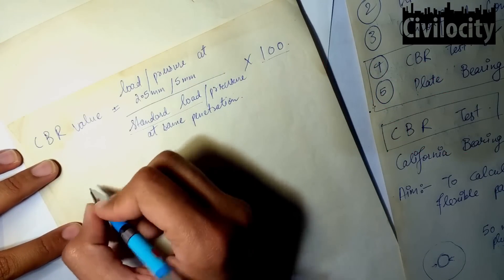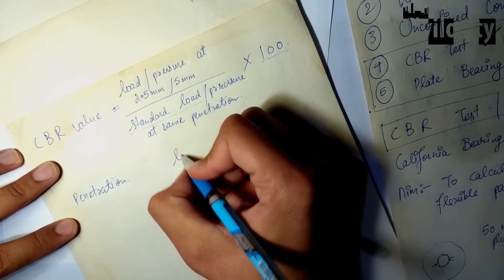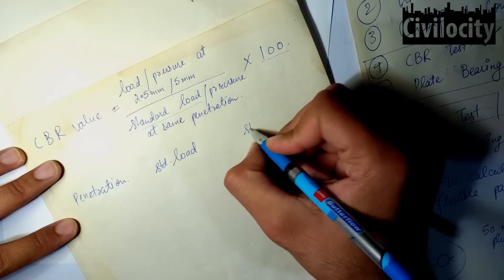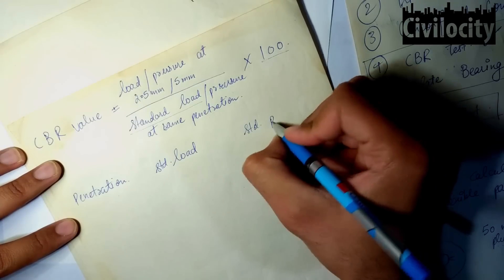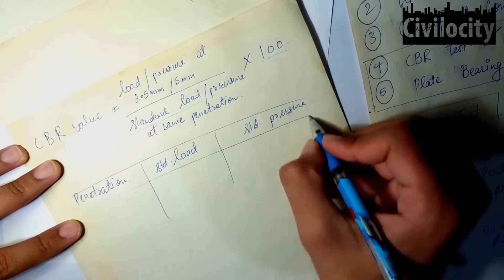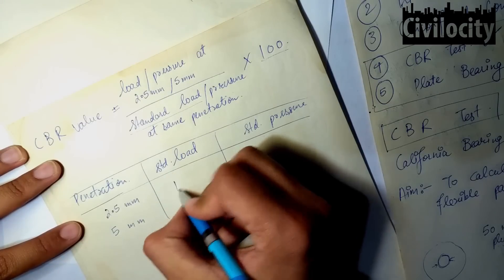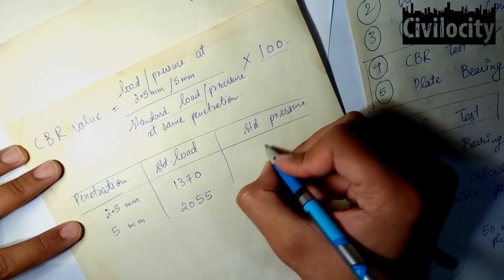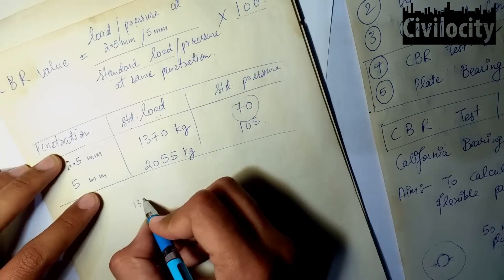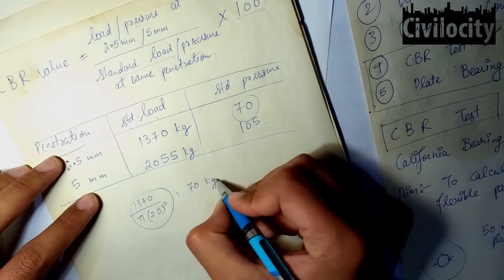The CBR value is the load or pressure at 2.5 mm or 5 mm recorded for the specimen, divided by the standard load or pressure at the same penetration level. You can use either load values or pressure values, but must use the same unit for both. The standard load for 2.5 mm penetration is 1370 kg and for 5 mm it is 2055 kg. The standard pressure is found by dividing the standard load by the area of the plunger; for 2.5 mm it gives 70 kg/cm².